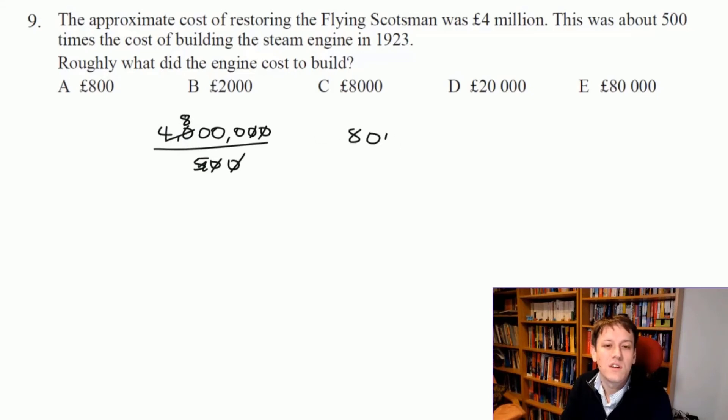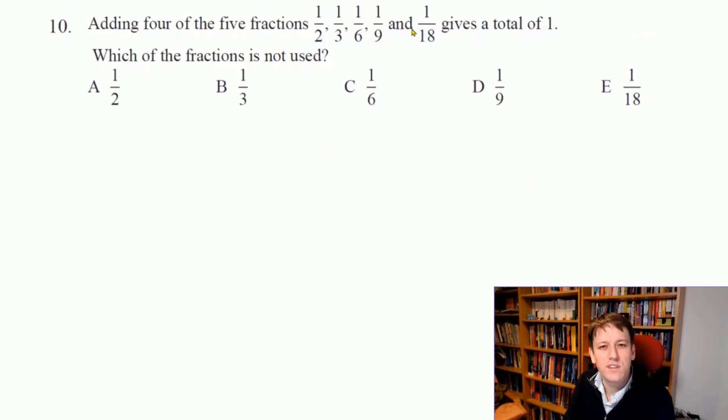It says adding four of these five fractions together gives a total of one. We want to work out which fraction isn't used. Rather than trying all the combinations out, what I'm going to do is just add together all the fractions and see how much bigger than one that is. That's going to be a lot faster, especially because we can see that they all have 18 as an easy denominator.